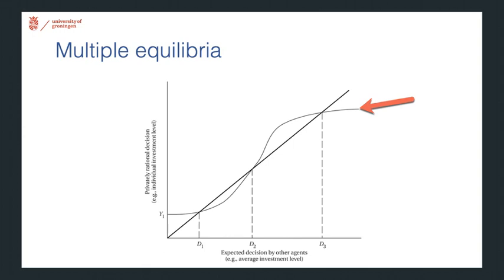It tells us what the privately rational decision on the vertical axis would be given the expected decision by other agents. This has a game theoretical flavor. What is the right investment level given what you expect everybody else to do?